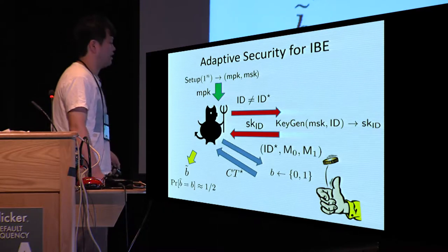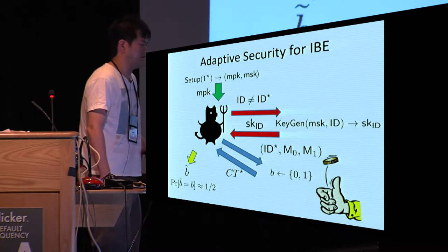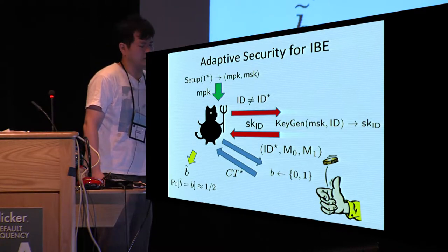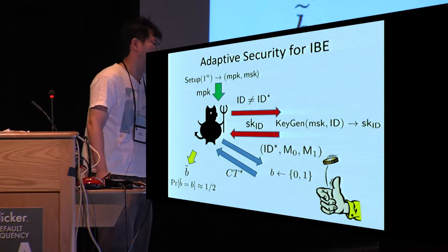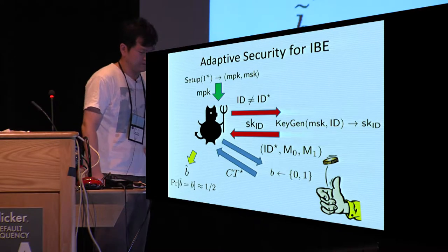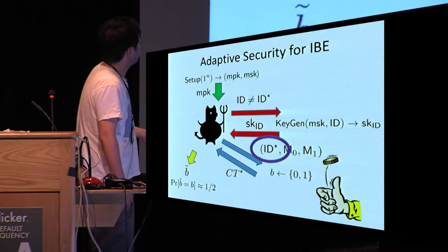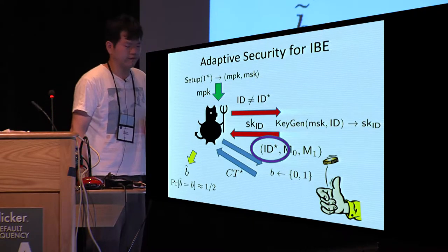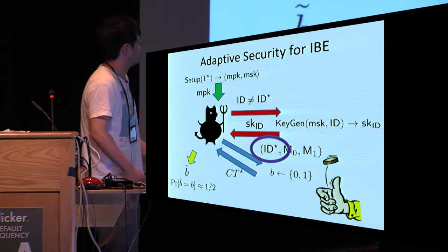As for security, we require adaptive security. Adaptive security is defined by a game between a challenger and an adversary. Essentially, it says the adversary cannot obtain information about the message if the message is encrypted under a challenger identity for which the adversary does not have the corresponding secret key. Furthermore, the challenge identity ID* is chosen by the adversary in an arbitrary and adaptive way, which is the source of difficulty in achieving this security notion.